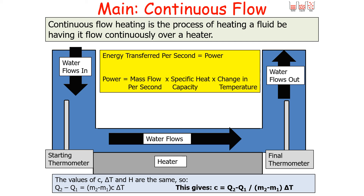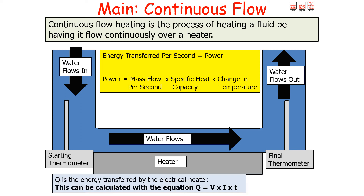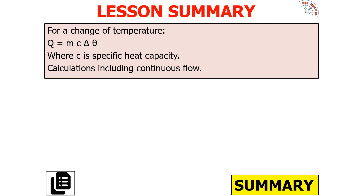To work out Q, since it's an electrical heater, you can use the electrical energy equation from the electricity topic: Q = V × I × t, where V is the potential difference across the heater, I is the current through the heater, and t is the time the heater is on. This allows you to work out the energy transferred by the heater, and therefore the specific heat capacity of the fluid or the power of the heater.